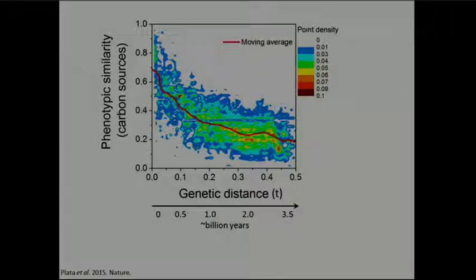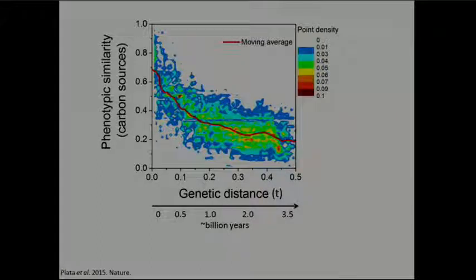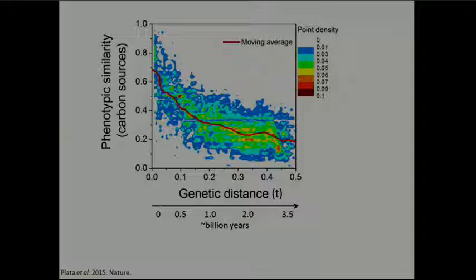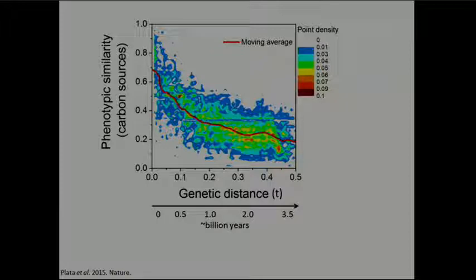Two interesting things: the similarity does not go to zero — even randomly sampling carbon sources, bacteria share more than expected by chance, so some common carbon sources are shared by all bacteria. Also, there is a large variance around the mean, meaning bacteria that diverged half a billion years ago can still be more phenotypically similar than bacteria that diverged much more recently.